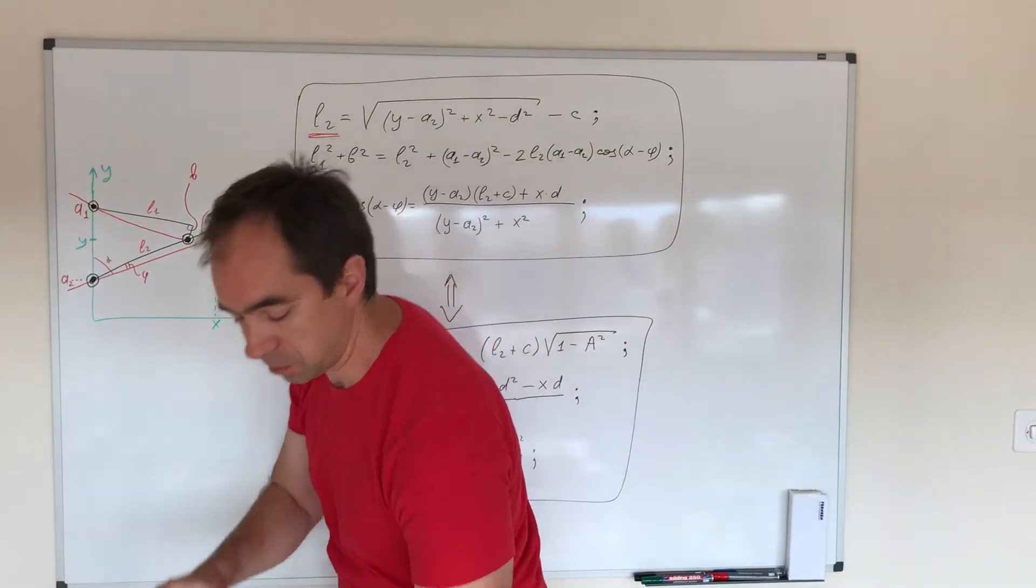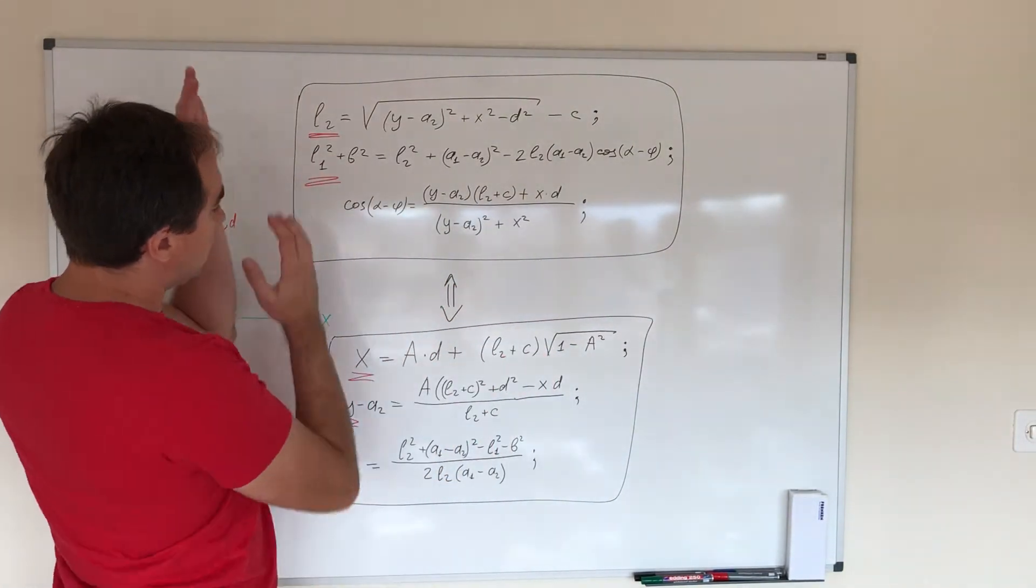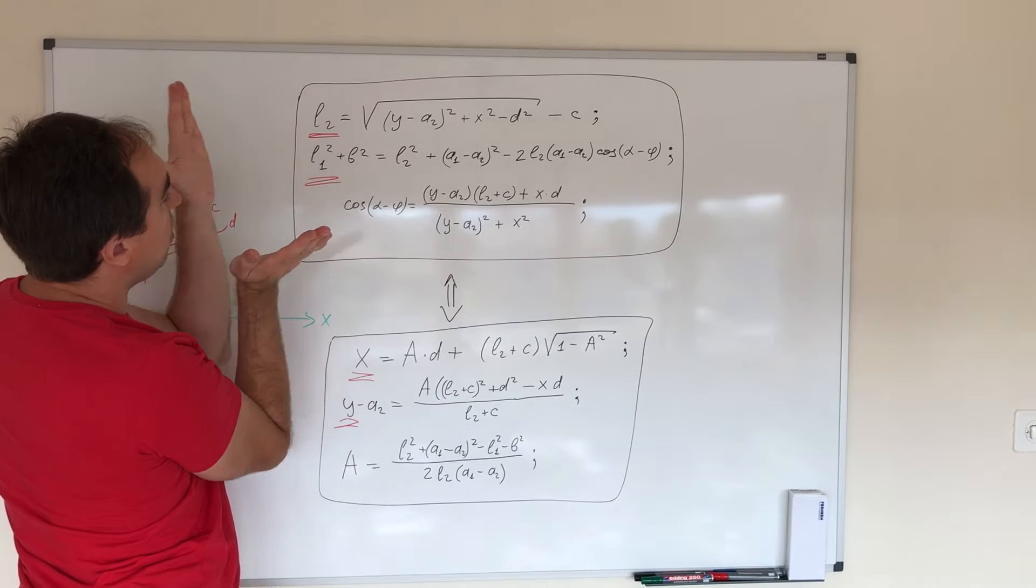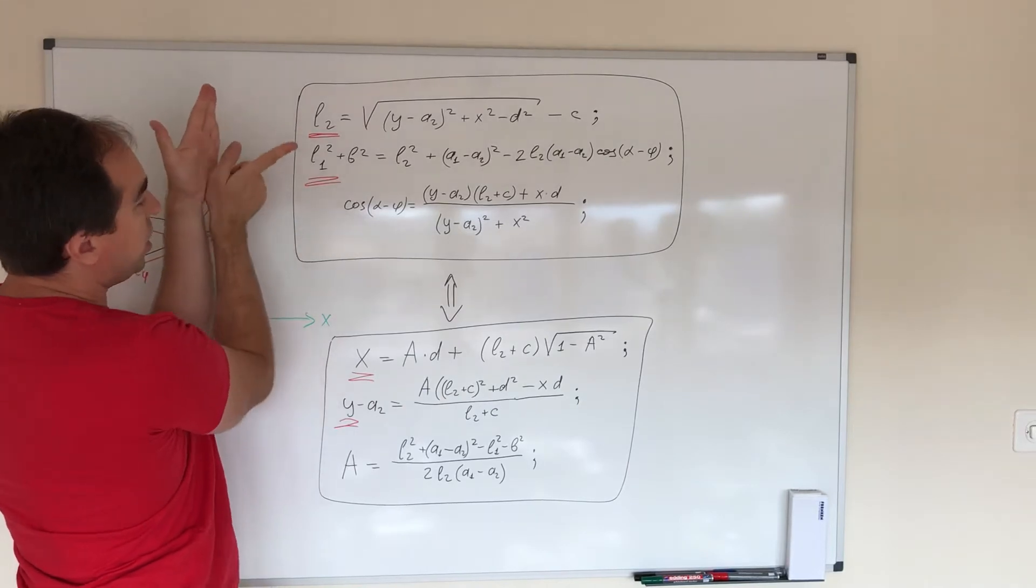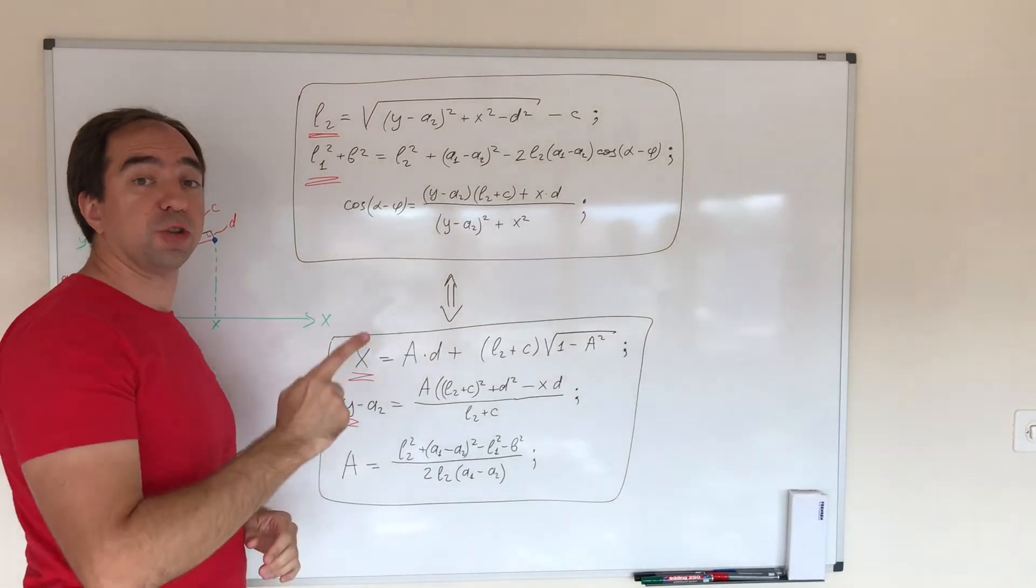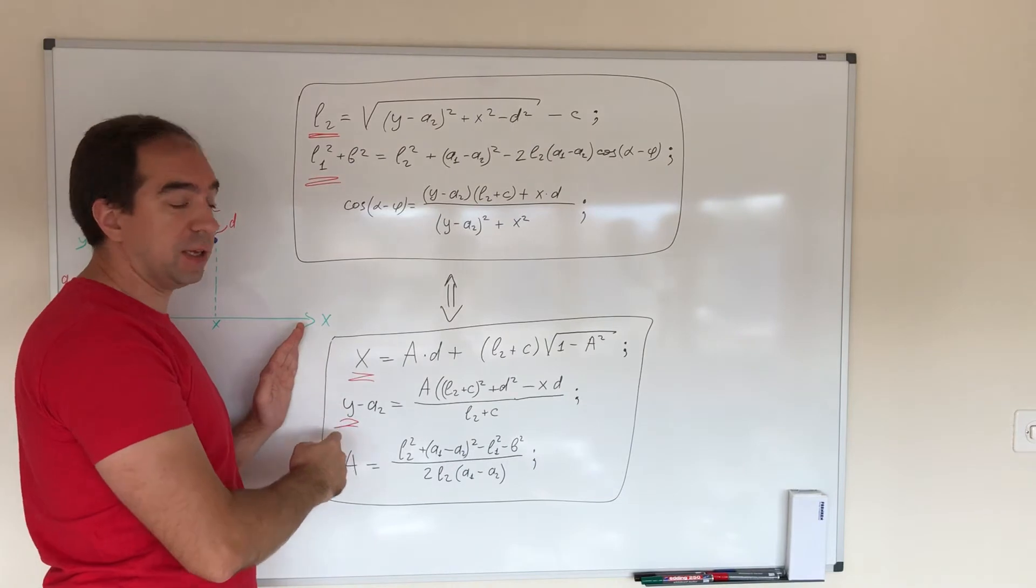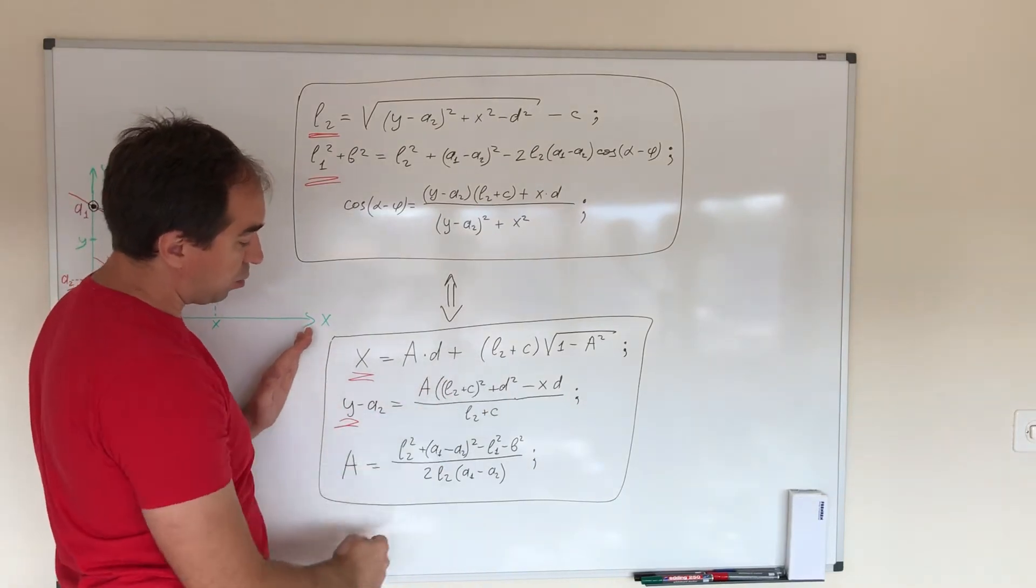These are the equations. The first set of equations give you the length of each threaded rod as a function of x and y, where x and y is the position of the LED. This is the inverse, so it gives you the position of the LED as a function of the threaded rod. This is going to be used to precisely calculate the trajectory of the end effector.